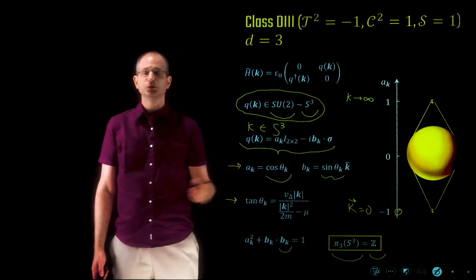To summarize: in this video we marched along a particular diagonal of the periodic table of topological insulators and superconductors. These phases are all classified by an integer invariant ℤ, and we worked out explicitly the form of this integer invariant and its physical meaning in each case. Thank you for watching.